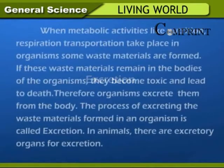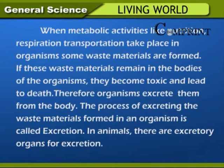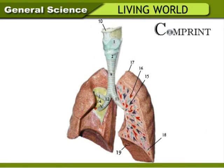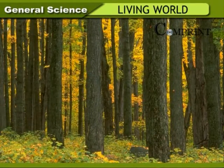Excretion. When metabolic activities like nutrition, respiration, and transportation take place in organisms, some waste materials are formed. If these waste materials remain in the bodies of the organisms, they become toxic and lead to death. Therefore, organisms excrete them from the body. The process of excreting the waste materials formed in an organism is called excretion. In animals, there are excretory organs: skin, lungs, and kidneys. There are no separate organs for excretion in plants. Plants utilize the waste materials for their protection — only plants have this ability.